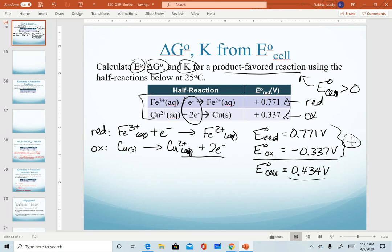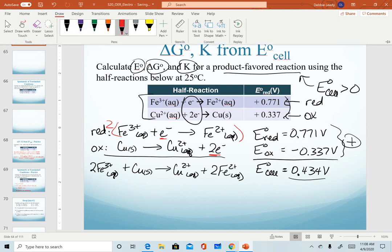Now again the question doesn't specifically ask for a balanced chemical equation but in a later calculation we will need it so while we're on this screen let's go ahead and take a look at balancing this. Remember ultimately we are balancing so that our electrons will cancel. In this scenario that means my iron half reaction needs to be multiplied through by 2. And so that's going to give me 2 Fe³⁺ plus a copper solid forming Cu²⁺ ions and 2 Fe²⁺ ions.